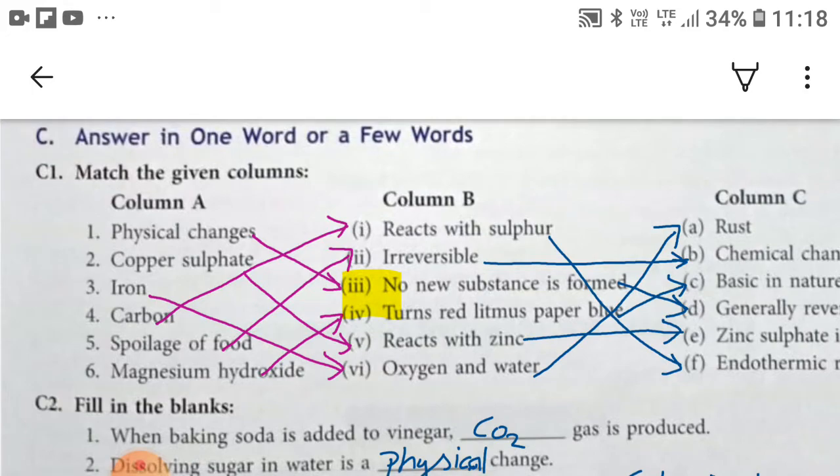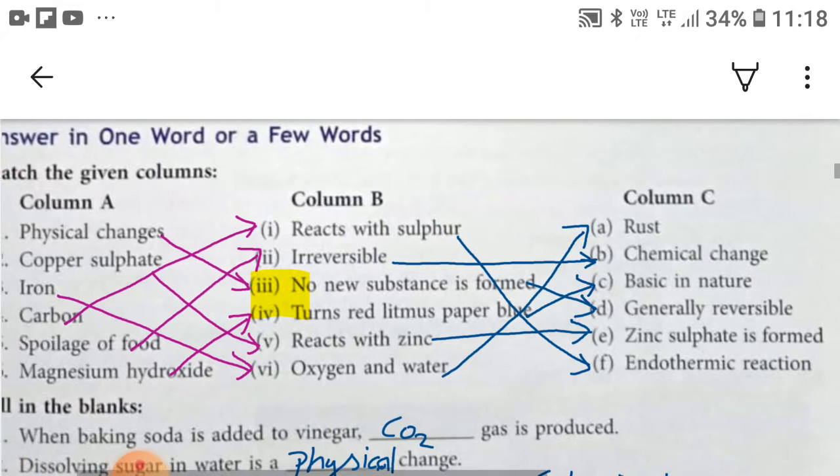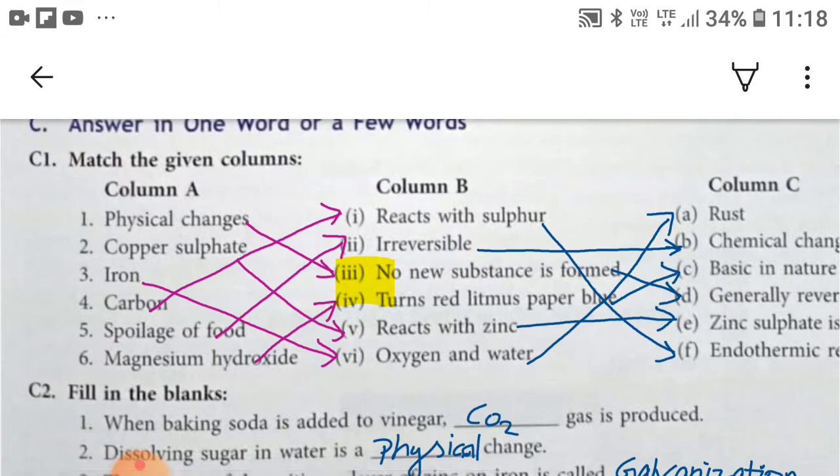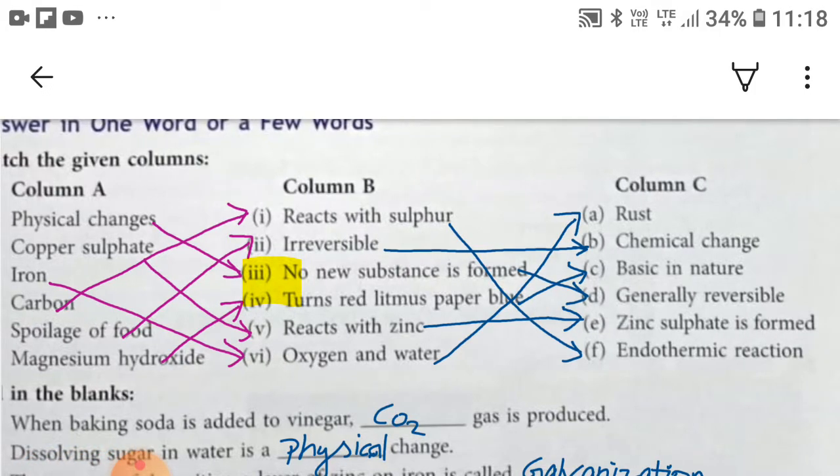Fourth, carbon can be matched with reacts with sulfur, and reacts with sulfur can be matched with endothermic reaction. Fifth, spoilage of food can be matched with irreversible, and irreversible can be matched with chemical change. Magnesium hydroxide, which is six, can be matched with turns red litmus paper blue and it can be matched with basic in nature.